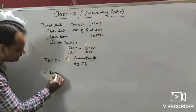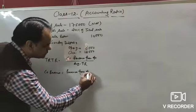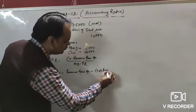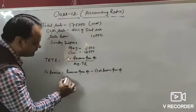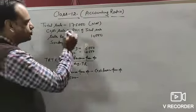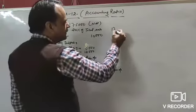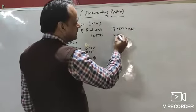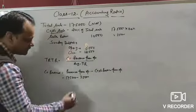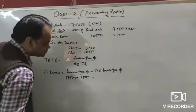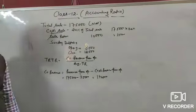Credit revenue from operation = revenue from operation minus cash revenue from operation. Revenue from operation is ₹1,75,000 (already given). Cash sale = 20% of ₹1,75,000 = ₹35,000. Therefore credit revenue from operation = ₹1,75,000 minus ₹35,000 = ₹1,40,000.